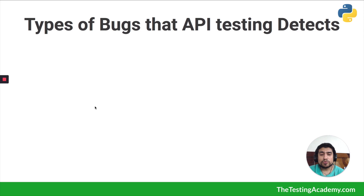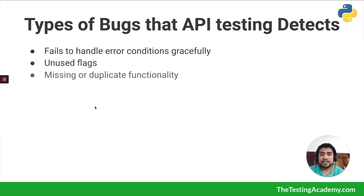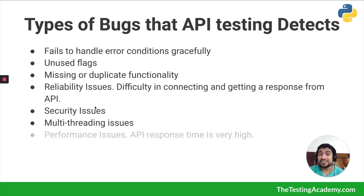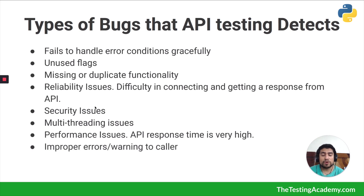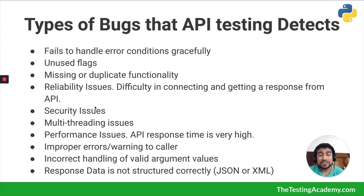Types of bugs in API testing include: failure to handle particular errors, unused flags, missing or duplicate functionalities, reliability issues, security issues, multi-threading issues, performance issues, improper errors and warnings, incorrect handling of valid arguments, and response data not being checked properly.